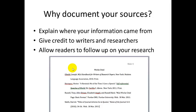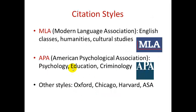Now, there are two main citation styles that are used in academic writing. They're known as MLA and APA. MLA stands for Modern Language Association. This format is typically used in English classes — your English 101 or 102 classes — in humanities classes, classes that have to do with art history, history, music, or culture and cultural studies. A lot of the debate-style papers that you write in 100-level English classes typically will be written in MLA style.